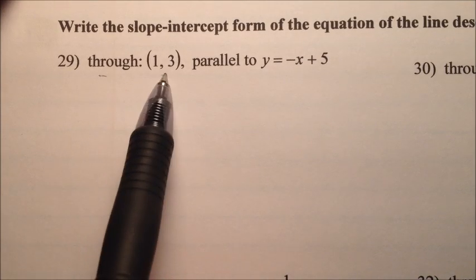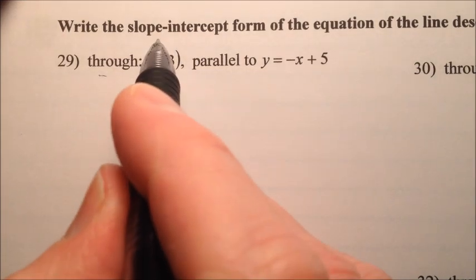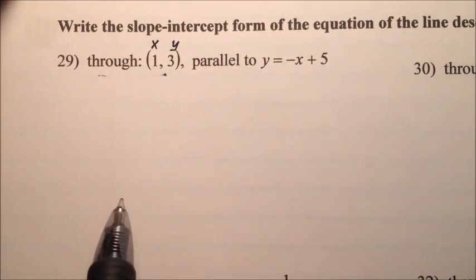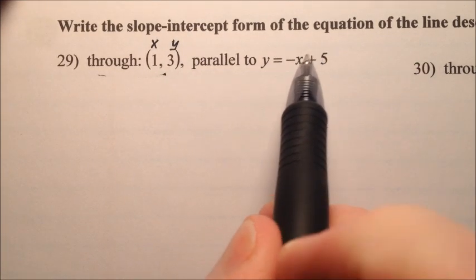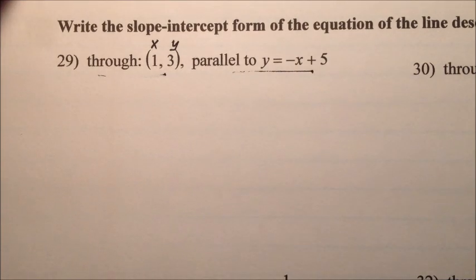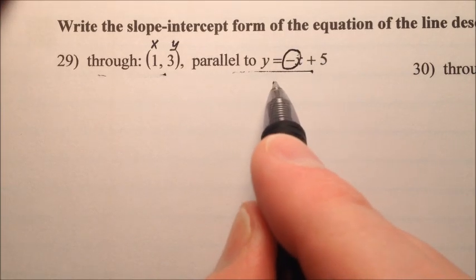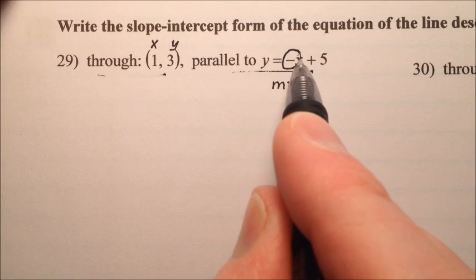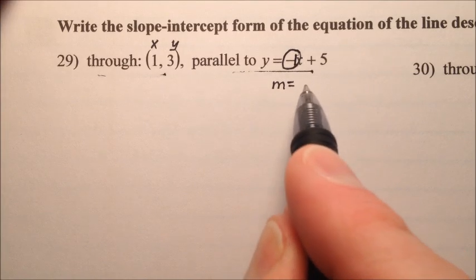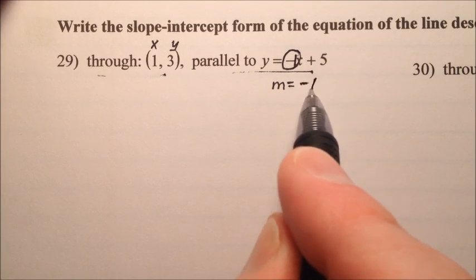So number 29, we know it goes through this point, so we have an x-value and a y-value we can use, and it's parallel to this line. Recall what does parallel mean? Parallel means that they share the same slope. If we look at this slope right here, what is the slope of this guy? It's a negative x, so there's really a 1 in front of there, so the slope is negative 1.